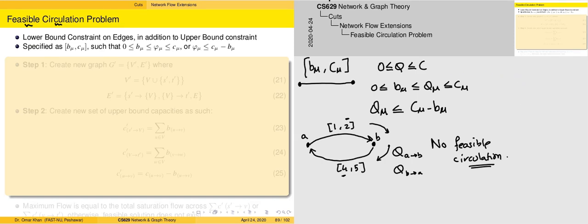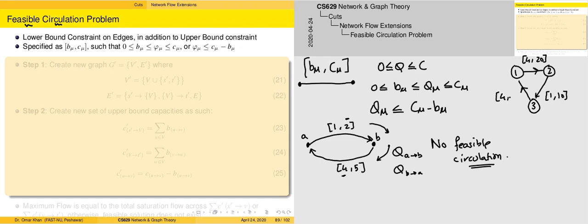We can see how this works by taking into account a graph comprising 3 vertices 1, 2, and 3 which are interconnected. The lower bound from 1 to 2 is 4 while the upper bound is 20. The lower bound from 2 to 3 is 1 while the upper bound is 10. And the lower bound from 3 to 1 is 4 while the upper bound is 15.